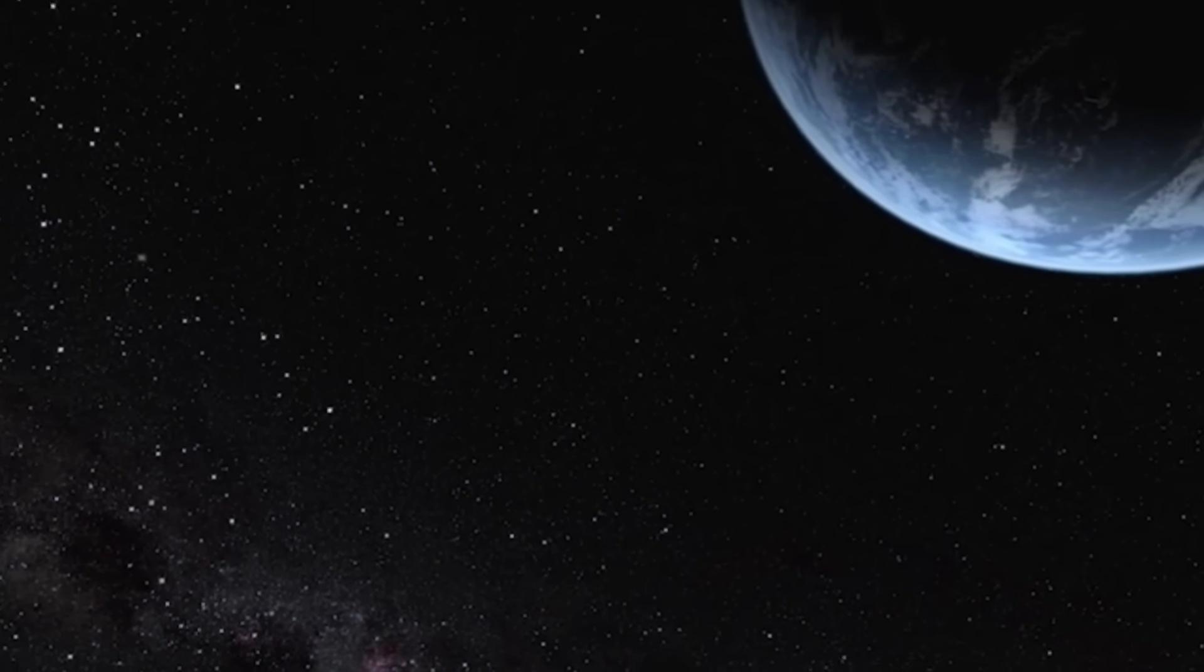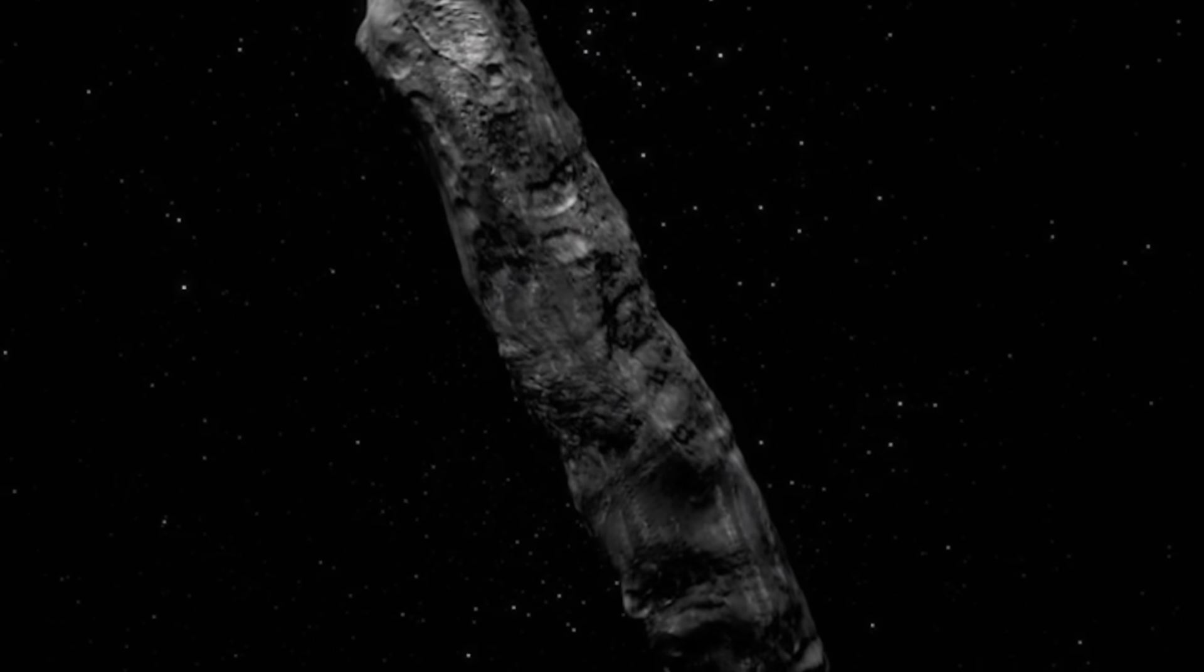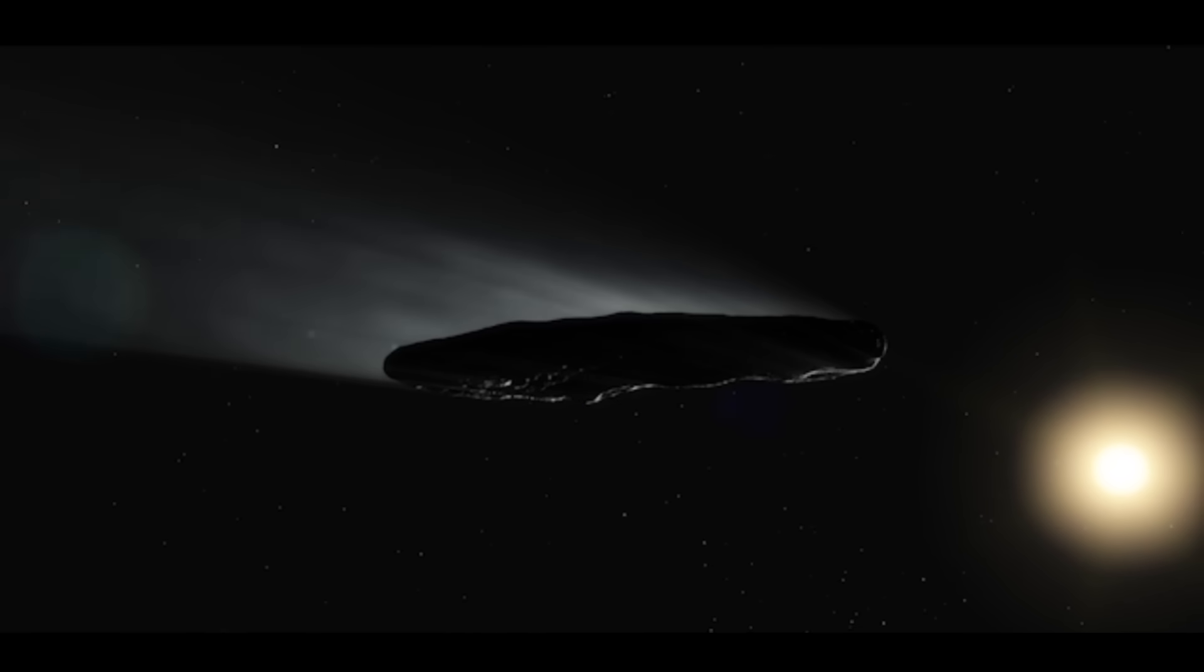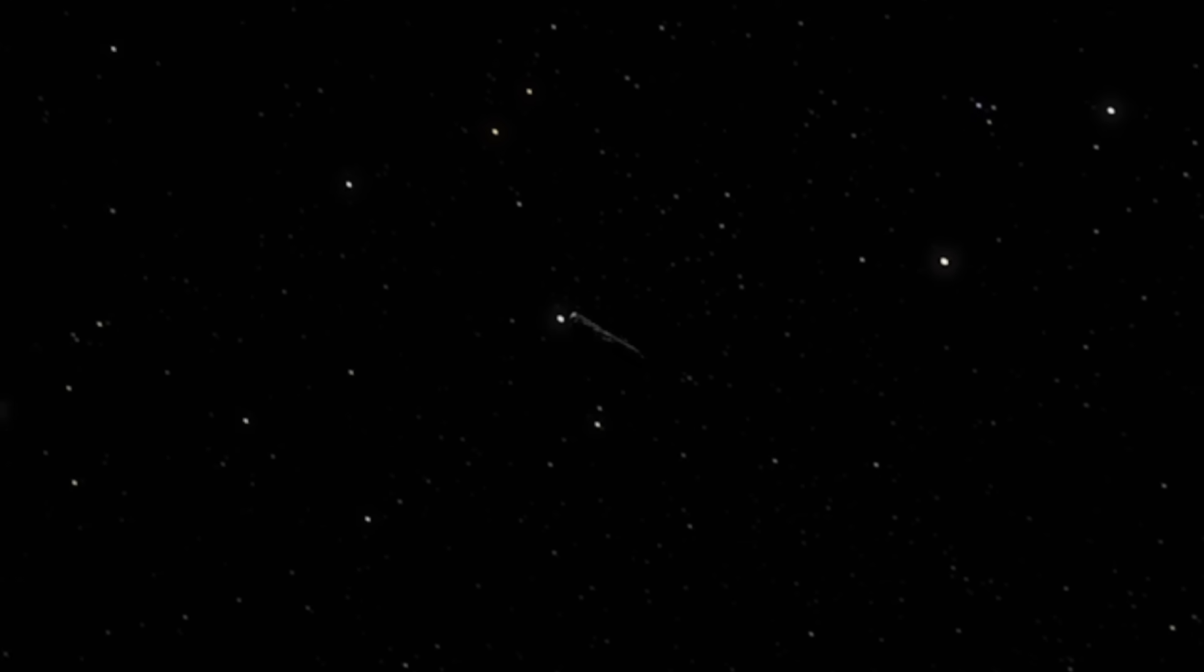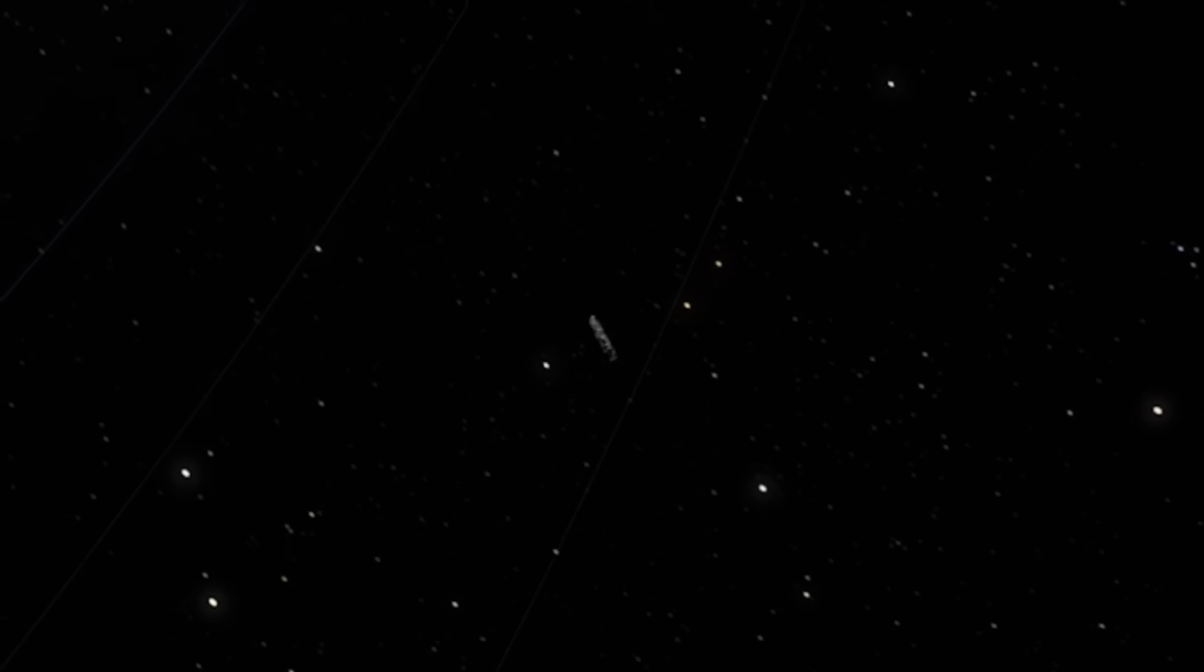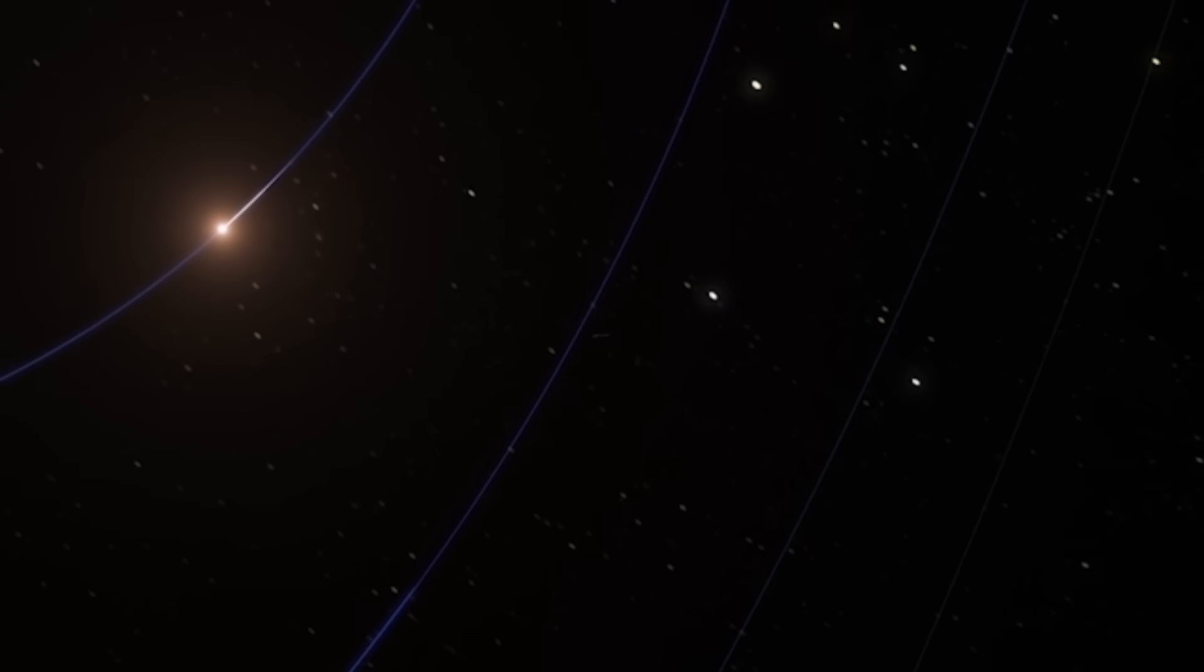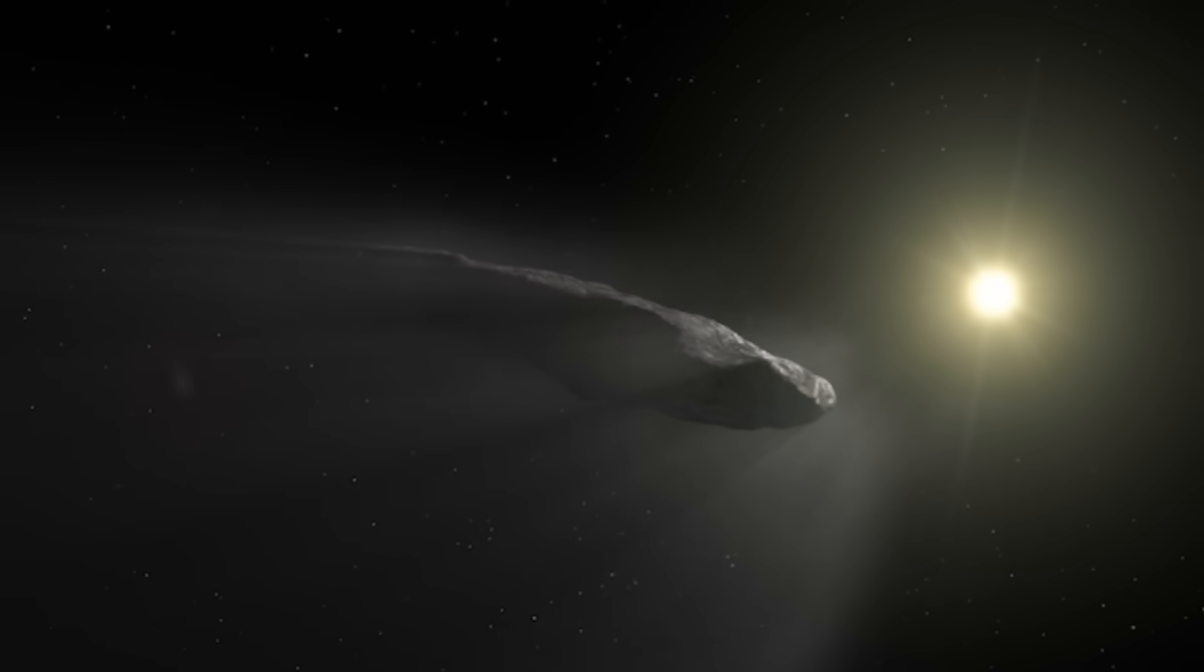In 2017, astronomers discovered an interstellar object named Oumuamua, the first of its kind ever observed. This elongated cigar-shaped object passed through our solar system at high speed, puzzling scientists. Scientists were puzzled by Oumuamua's nature because when Oumuamua moved away from the sun, it sped up slightly, which is unusual.